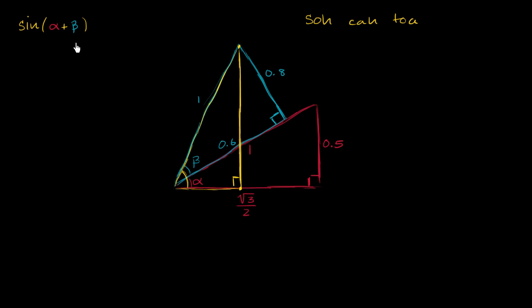And if you're familiar with your trig identities, something might be jumping out at you. We know a different way of expressing sine of alpha plus beta. We know that this thing is the same thing as sine of alpha times the cosine of beta